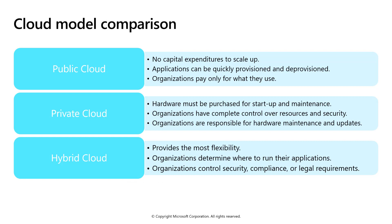There are three primary models that cloud service providers operate in. The first is the public cloud model, where any organization can leverage the capabilities of the cloud as it's open to the public — there's no money expended upfront, apps and services can be immediately provisioned or deprovisioned, and organizations only pay for what they use. The next is the private cloud model, where infrastructure, buildings, and hardware have to be purchased well in advance. The organization has complete control over resources and security, but that can cause additional operational expenses, and organizations are 100% responsible for hardware maintenance and updates. The last is the hybrid cloud model, where an organization may run some applications in their data center, some on-premises, and some in Azure, providing the most flexibility especially when there are proprietary hardware needs, security, compliance, or legal requirements.